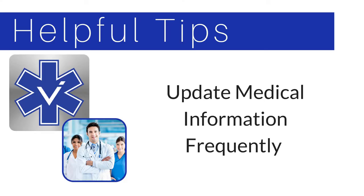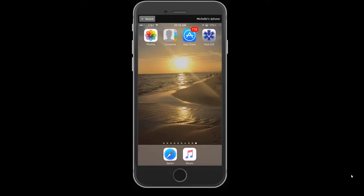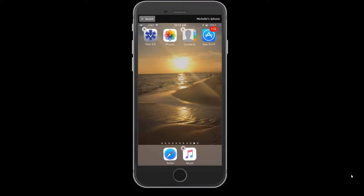We encourage you to update your information frequently, especially after each doctor's visit, noting changes to your current list of medications and medical status. Move the Vital ICE icon to the first page of app icons on your phone so that it appears on your screen in the upper left-hand corner. This is the designated area for In Case of Emergency apps and will assist first responders in locating your patient information more efficiently. To do this, tap and hold on the Vital ICE icon for several seconds, then move the icon to the top left-hand corner and release. Tap the Home button when finished.